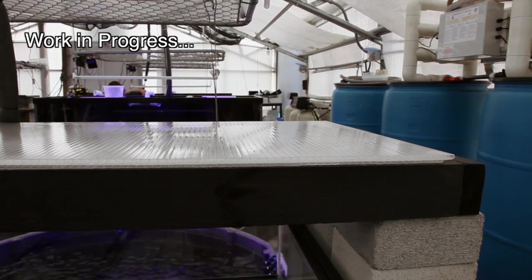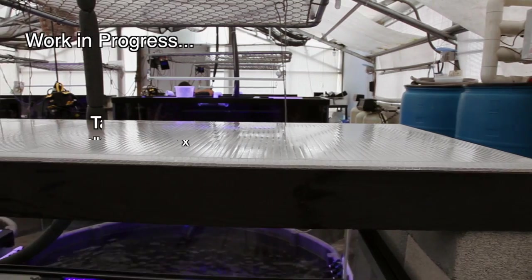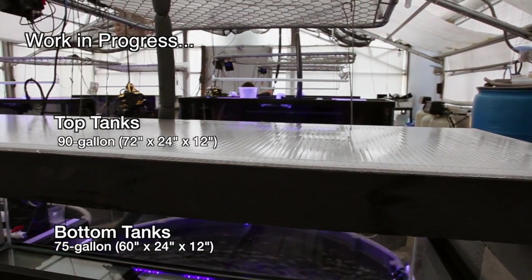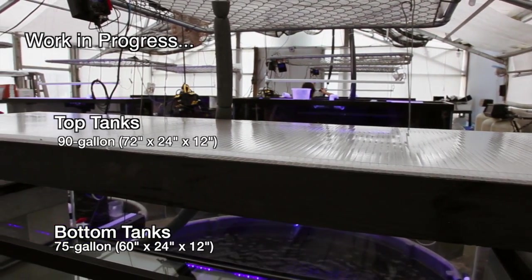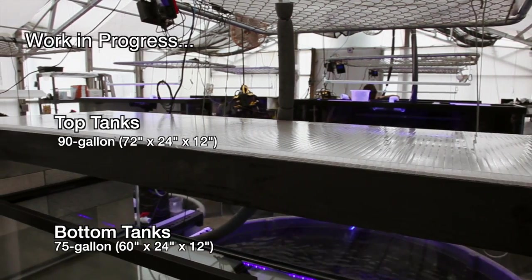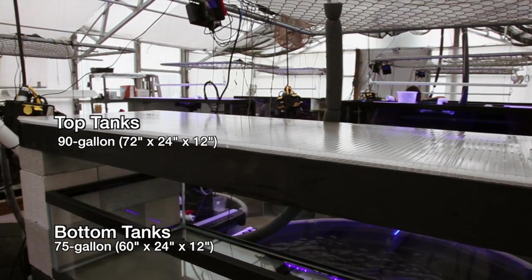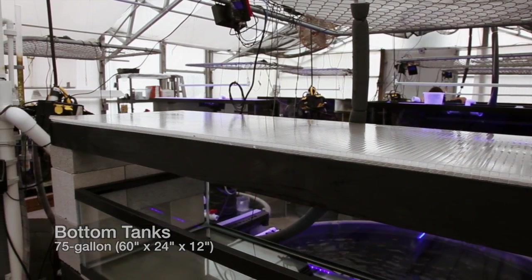We've learned that people gravitate to eye level tanks more than any other type of tank so the rebuild incorporates two 90 gallon tanks roughly at shoulder height. Below them are two 75 gallon tanks that are more general purpose.